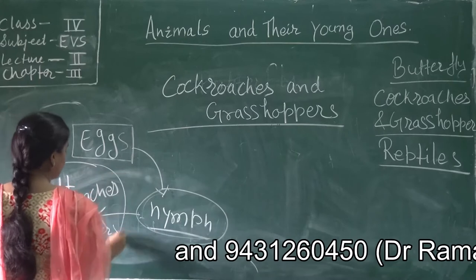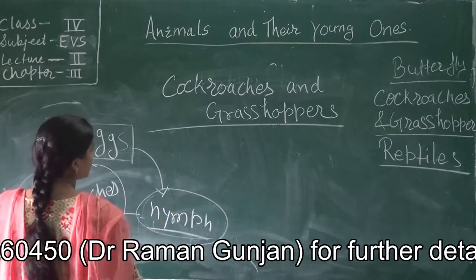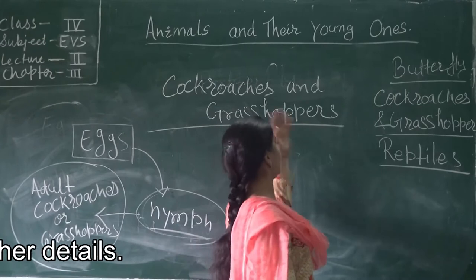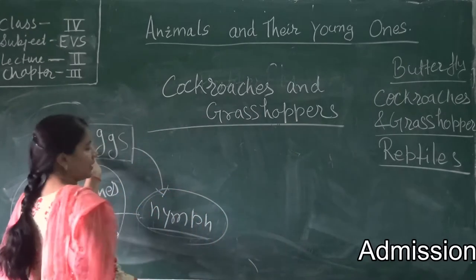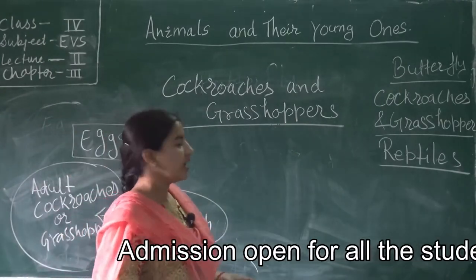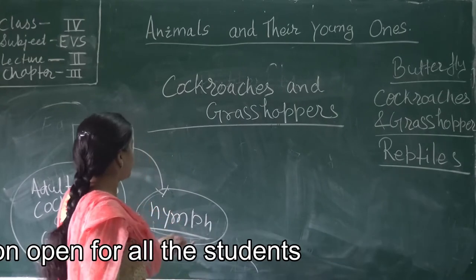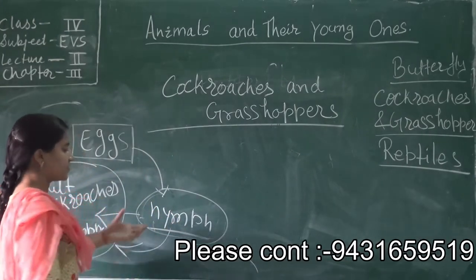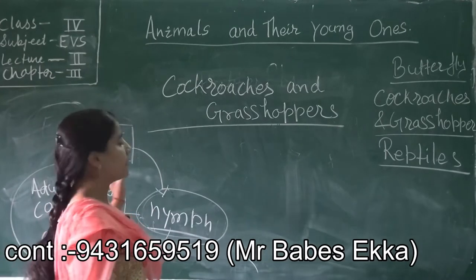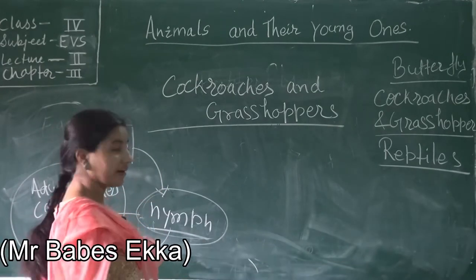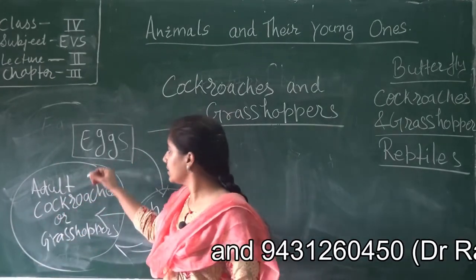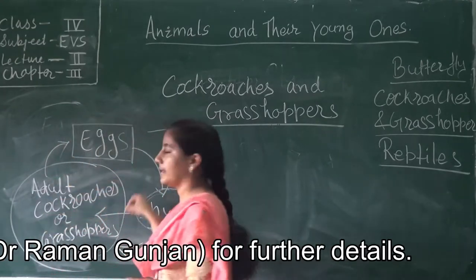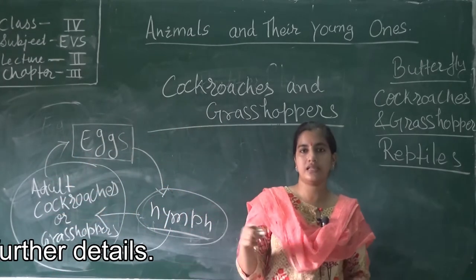This is the life cycle of cockroach and grasshopper. Cockroach and grasshopper lay eggs. The egg becomes mature and hatches after some time and it becomes a nymph. After several times of the nymph shedding its skin — also known as molting — it develops into an adult cockroach or grasshopper. Then this adult again lays eggs and this is a continuous life cycle.